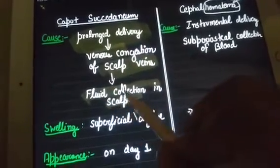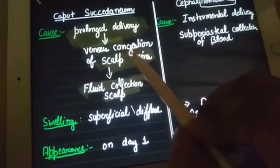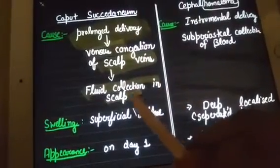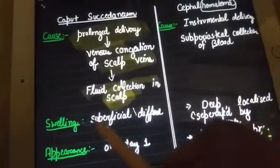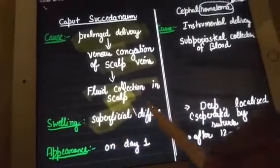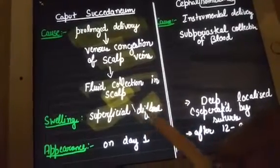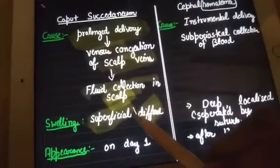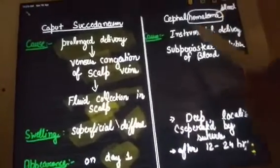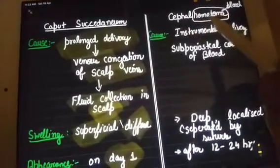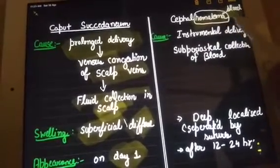This leads to fluid collection in the scalp. The collection is happening at the level of the scalp region, which is superficial, so the swelling will be superficial. It is not divided by sutures, so it is diffuse. Because it is superficial, it appears early — on day one itself.